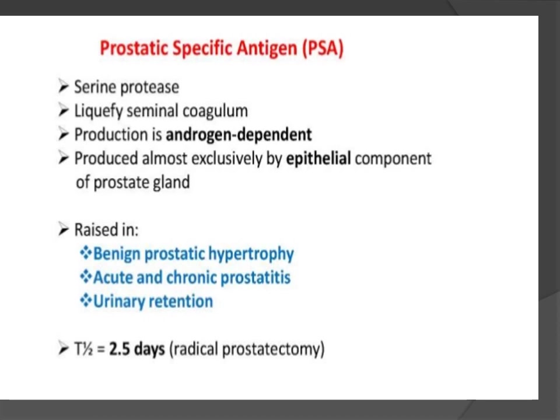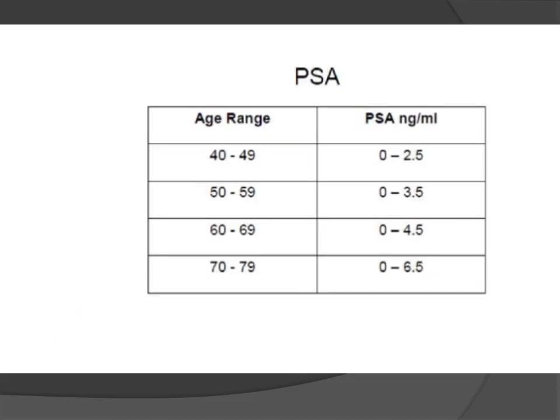Prostate specific antigen (PSA): PSA is a serine protease that liquefies seminal coagula. Production is androgen-dependent and produced almost exclusively by the epithelial component of the prostate gland. It is raised in benign prostatic hypertrophy (BPH), acute and chronic prostatitis, and urinary retention. Half-life is 2.5 days. Normal levels by age range: age 40–49: 0–2.5; age 50–59: 0–3.5; age 60–69: 0–4.5; age 70–79: 0–6.5 ng/ml.